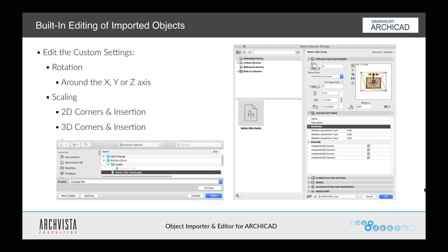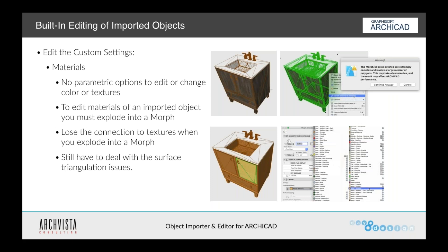We can change the material, but the only way to do that is by going to the model panel and choosing to change the material for the entire element versus for individual components within it. So if I bring this in and want to change just the sink material, I can't do that without exploding it into a morph — because if I go into the model panel and change the material, I'll change the material for everything: the handle, the wood, the sink, and the tap. These are four different materials.